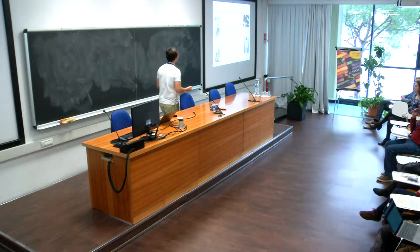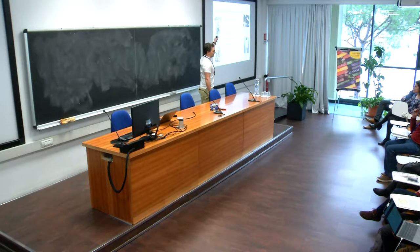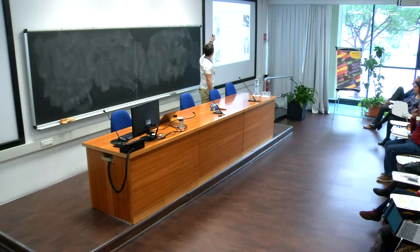I'll start a little bit historically. It's been nearly a century since the word 'robot' came up and since the first movies showed a humanoid robot. Since the 1960s we already have industrial robot arms, like Engelberger's Unimate. Since the 1970s, everybody is convinced thanks to Star Wars — but it really took until the 1990s that we had the first full humanoid robots, which would look sufficiently interesting for more complex tasks outside of factory environments.